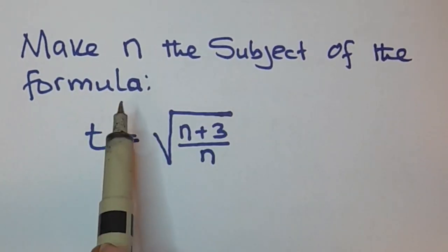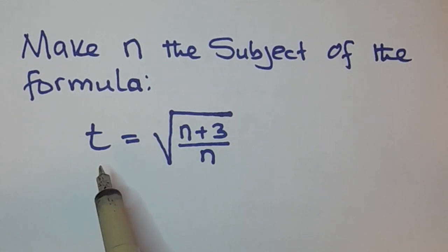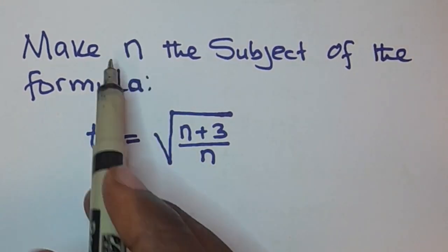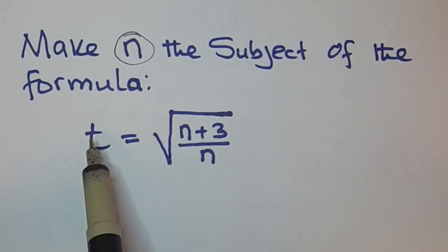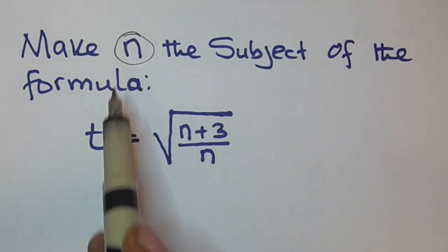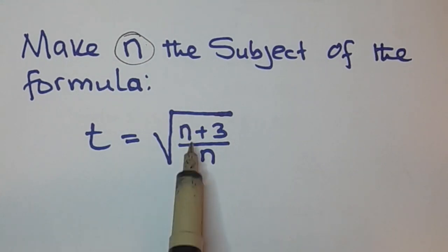When they say make a variable the subject of the formula, it means they want you to isolate that variable. In this case, they want us to isolate n such that n is on its own. You can see here t is the subject of the formula because t is on its own. We want to make n the subject of the formula.